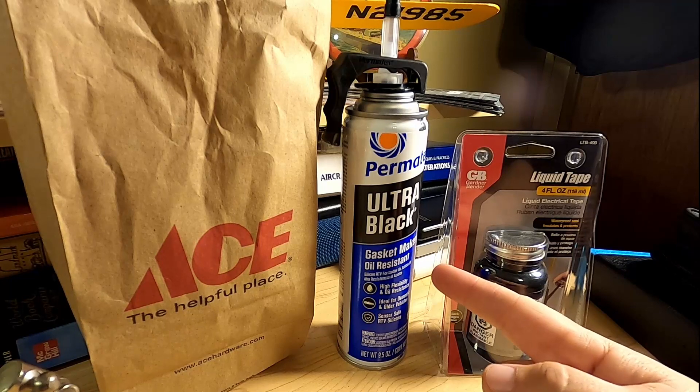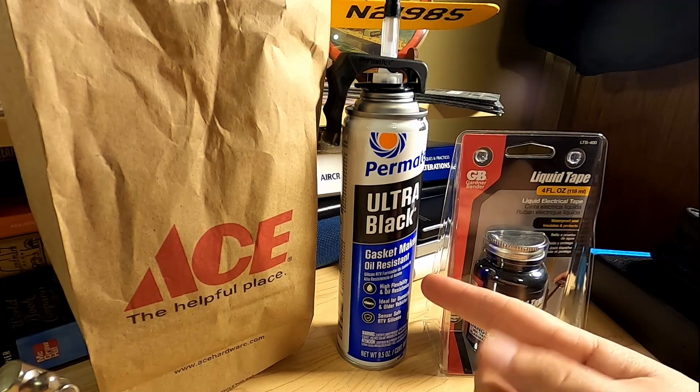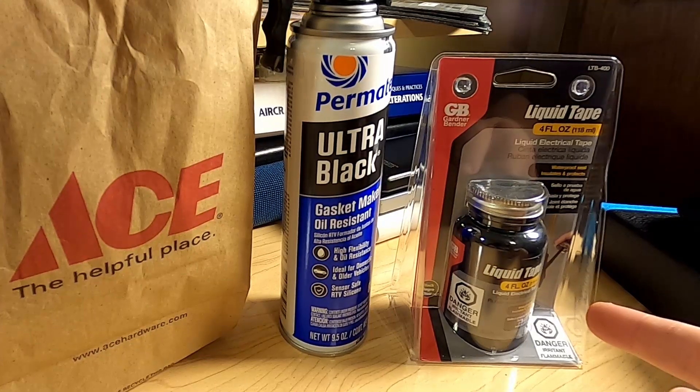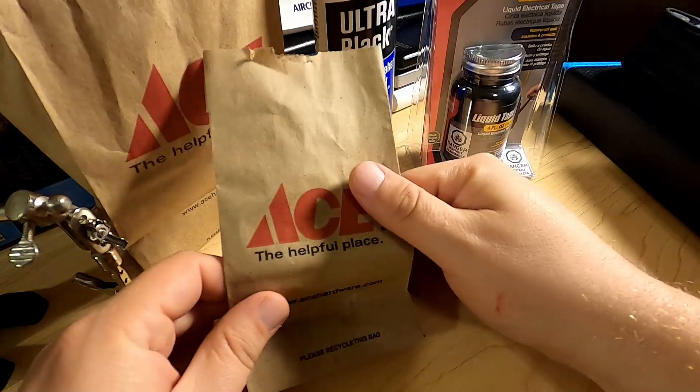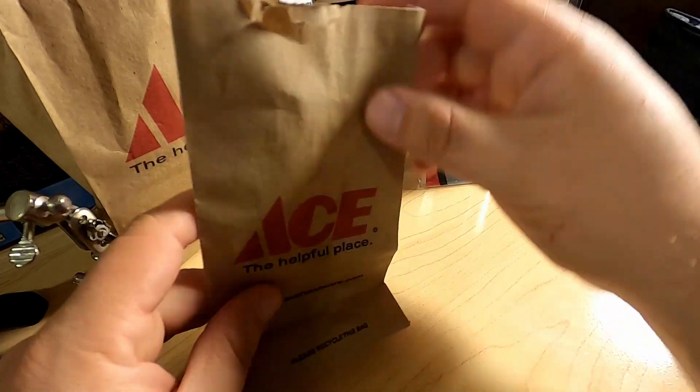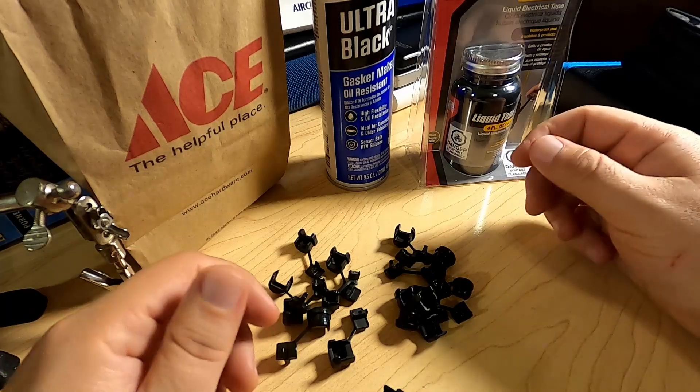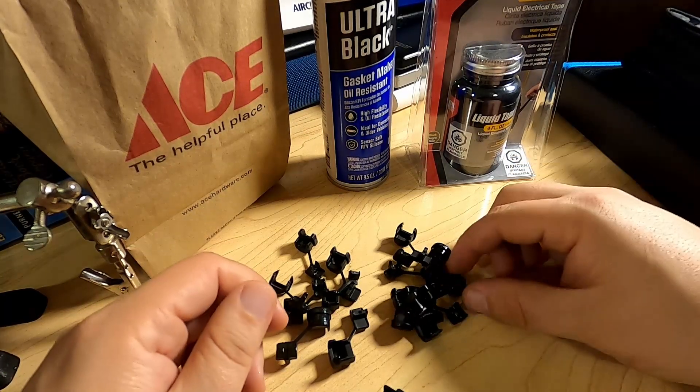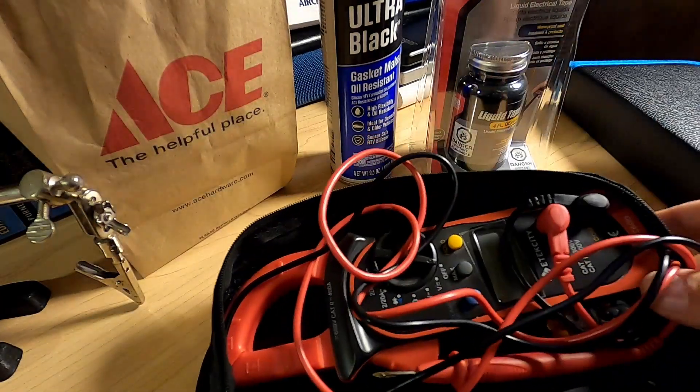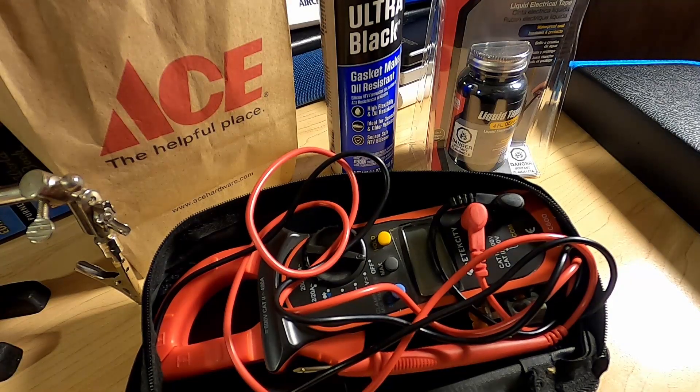And here's what we'll be using today. We have some Permatex Ultra Black Silicone. I use this stuff for pretty much everything. We've got some liquid electrical tape that we'll see how well that works. And then I got a couple different kinds of strain reliefs. A couple different sizes, I wasn't sure exactly what we need and I didn't want to run back and forth. We also have a trusty multimeter for checking our connections afterwards.